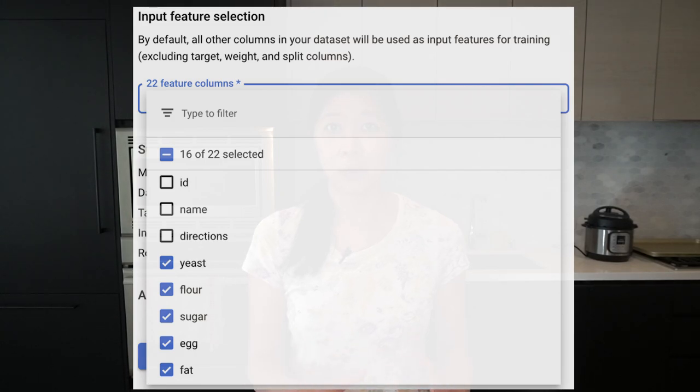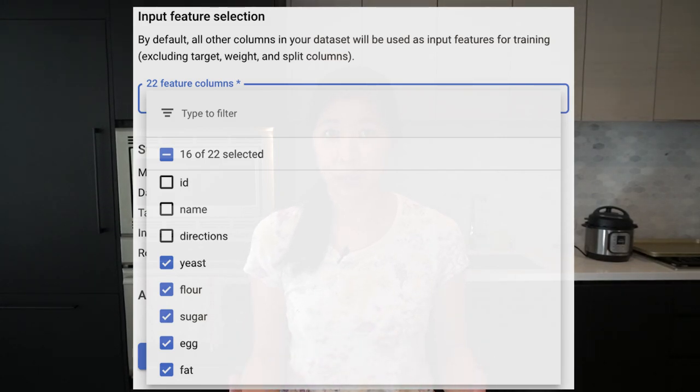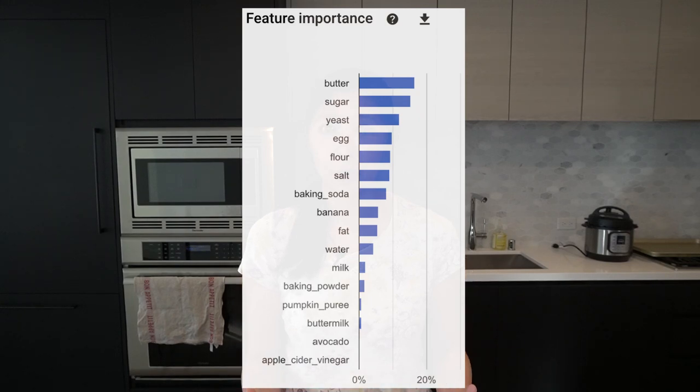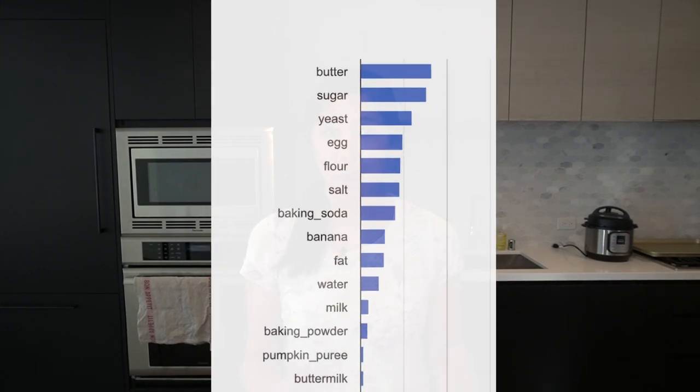To train their model they used GCP, and the AutoML tools let you upload your table and tell it which column is your target — cake, cookie, or bread — and train with a click of a button. During training it looks at the feature columns, which in this case are the amounts of each ingredient, and learns patterns to predict the recipe category. They found, not surprisingly, that butter, sugar, egg, and yeast are important predictors of recipe type.